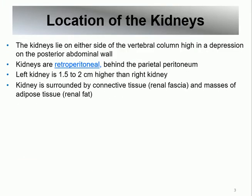The kidney is located behind the peritoneum, which is why we call it retroperitoneal. 'Retro' means behind, and 'peritoneal' refers to the peritoneum — the serous membrane surrounding the vast majority of abdominal-pelvic organs. The kidneys are exceptions to that. To stay in place, the kidney is surrounded by two extra layers: a connective tissue called the renal fascia, and adipose tissue called the renal fat.